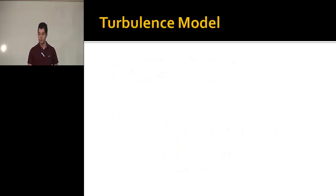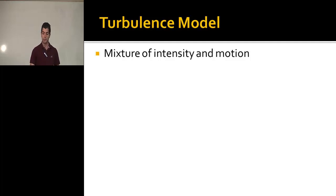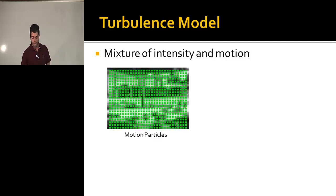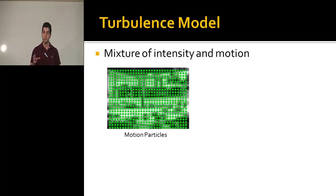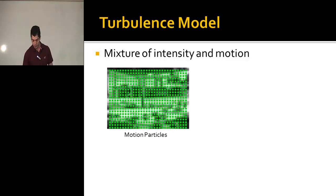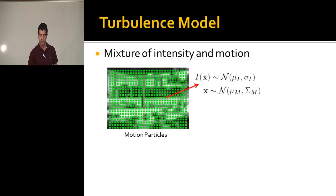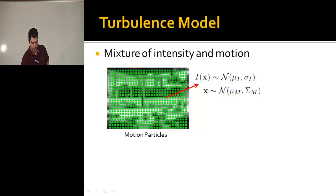The object confidence map comes from the turbulence model, which is a simple mixture of intensity and motion. To capture motion in the scene, we overlay particles and track them using optical flow. The intuition is that particles moving because of turbulence will perturb around their original location, whereas particles moving because of objects will move linearly in the scene. We model this using two Gaussians: one in the intensity domain and one in the position domain, each parameterized by its mean and covariance.